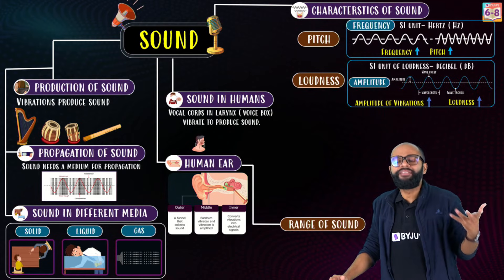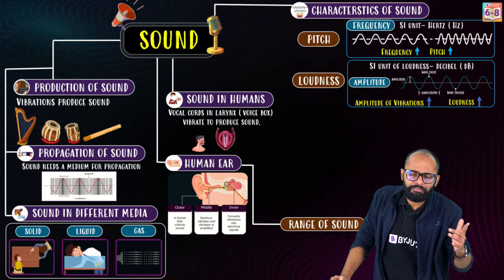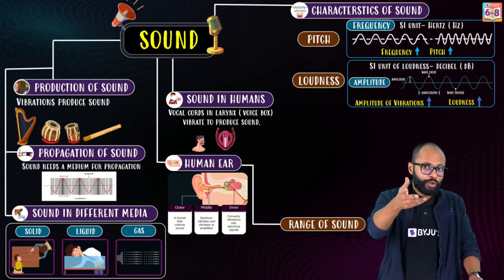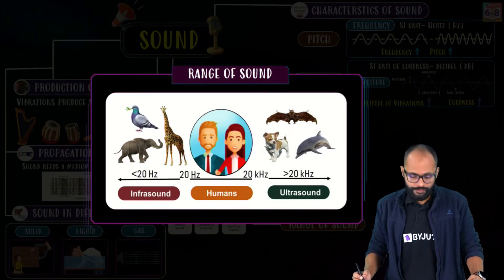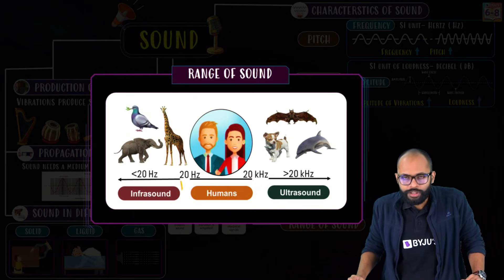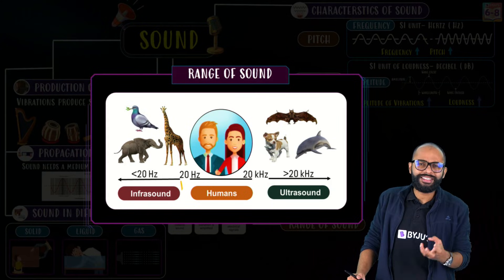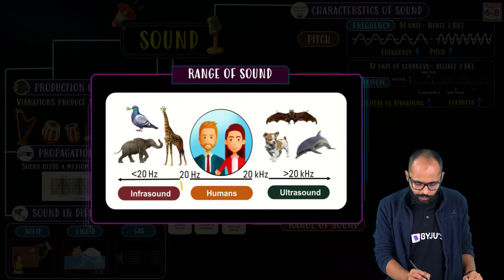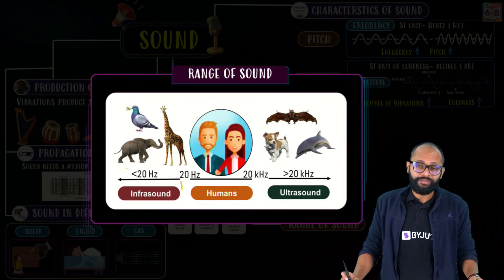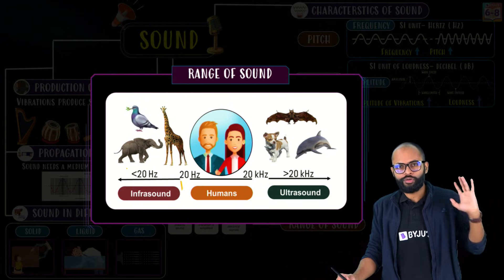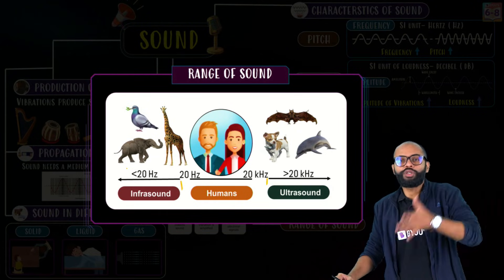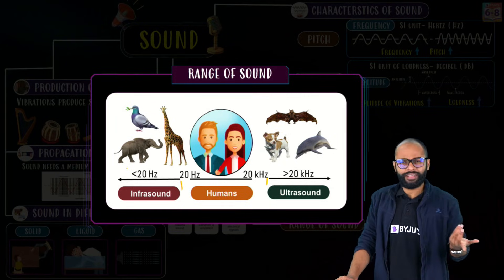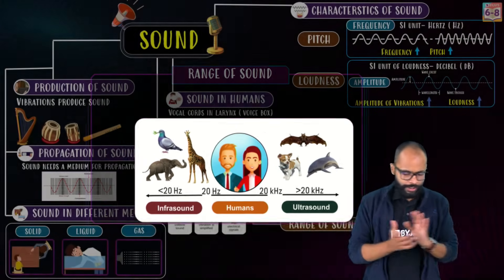Humans cannot hear everything — we have a range. The human audible range is 20 Hz to 20,000 Hz (20 kHz). Below 20 Hz is called infrasound — pigeons, giraffes, and elephants can hear it. Above 20,000 Hz is called ultrasound — dogs, dolphins, and bats can hear it. Bats use ultrasound in echolocation.